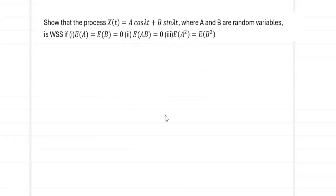The problem is: show that the process x(t) = a·cos(λt) + b·sin(λt), where a and b are random variables, is a WSS process if the following conditions are satisfied: E[a] = E[b] = 0, E[ab] = 0, and E[a²] = E[b²]. This problem is very similar to the last discrete problem we did, except that here the conditions are given directly rather than through explicit probability values, making it much easier to solve.